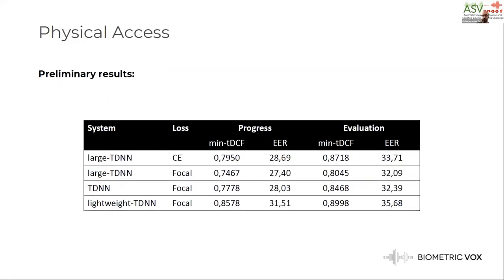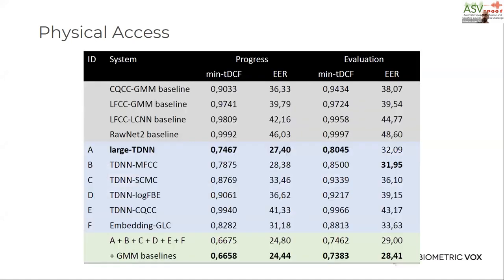These are our preliminary results on the physical access task. Comparing the first two rows, we can see that focal loss provides a nice improvement over the usual cross-entropy criterion. Focusing on the choice of neural network architecture, the best results are obtained by the large TDNN, followed by the regular TDNN, and then the lightweight TDNN, which is behind the other two in terms of performance but still manages to obtain competitive results — a nice finding given its greatly reduced number of parameters.